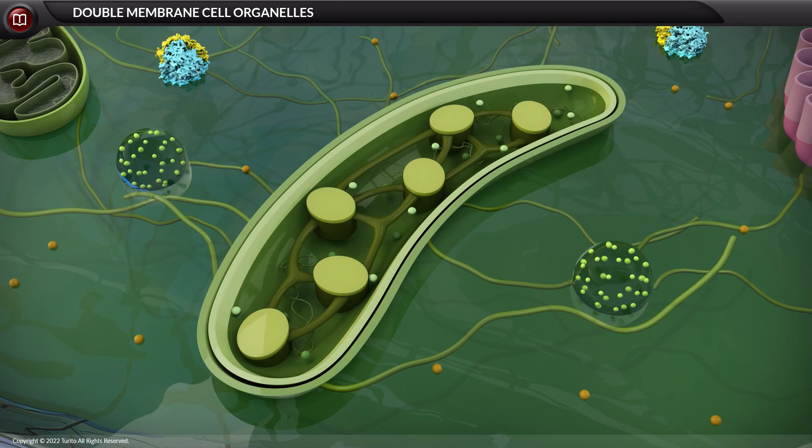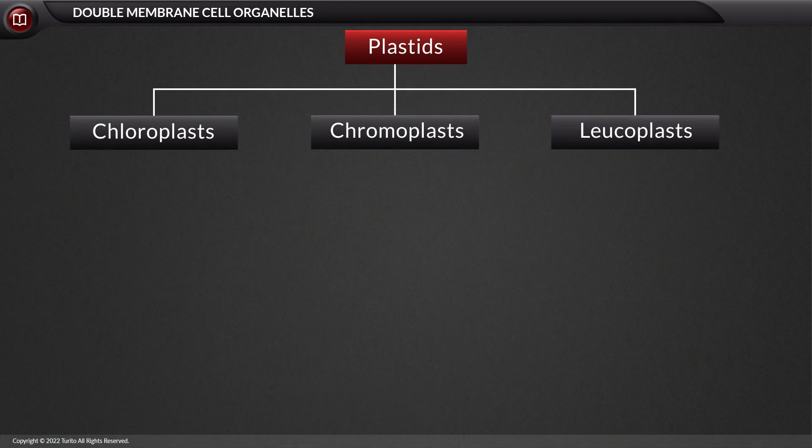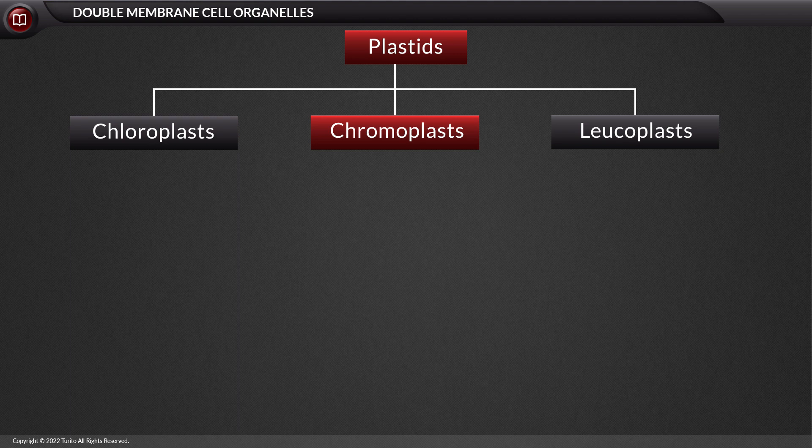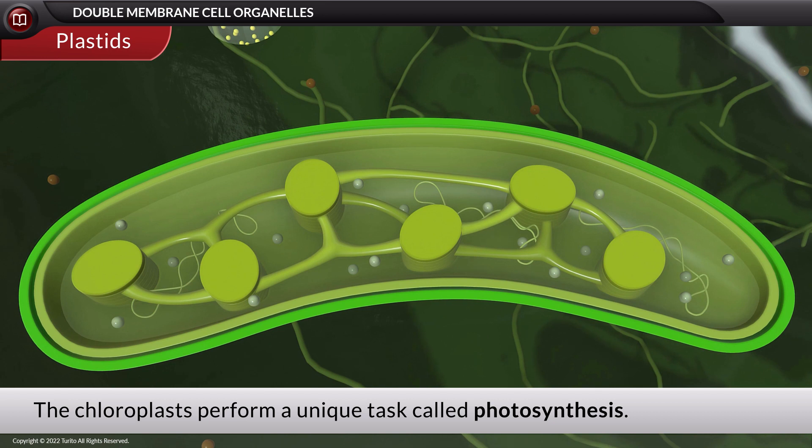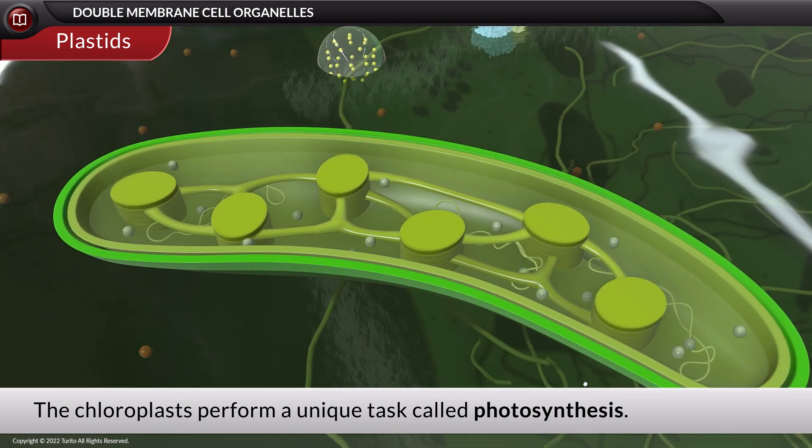Let us now move to the next double membranous cell organelles, the plastids. Plastids are of three different types, namely chloroplasts, chromoplasts, and leukoplasts. Chloroplasts are plastids present in plant cells that play a critical role in photosynthesis.